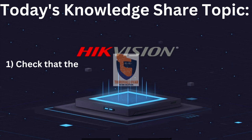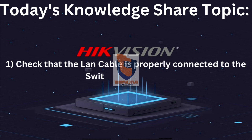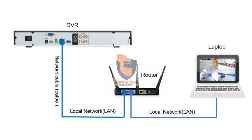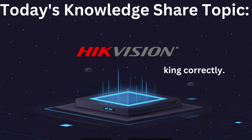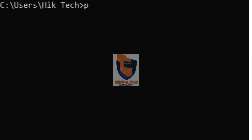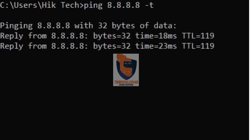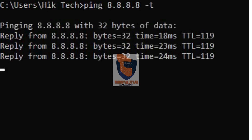Step 1: Check that the LAN cable is properly connected to the switch and device. Step 2: Check that the internet is working properly. You can ping the Google DNS 8.8.8.8 to check the internet connection and continuity.